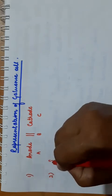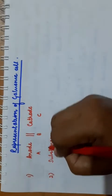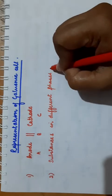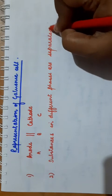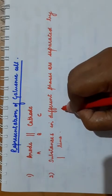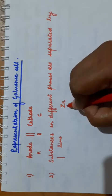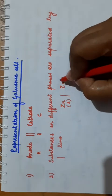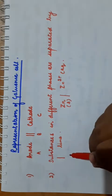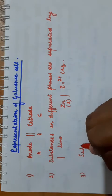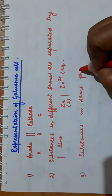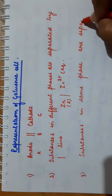Second point: substances in different phases are separated by a single vertical line. Third point: if the substances are in the same phase, they are also separated by a vertical line — but using a comma instead.